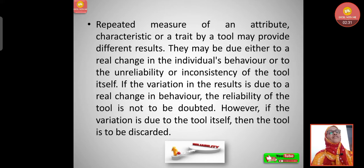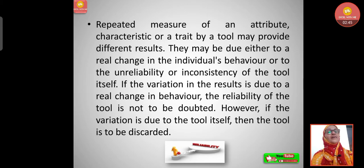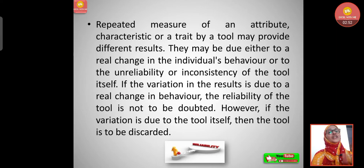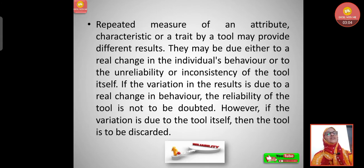Repeated measurement of an attribute or trait by a tool may provide different results. These variations may be due either to a real change in the individual's behavior, or to the unreliability or inconsistency of the tool itself. If the variation is due to a real change in behavior, the reliability of the tool is not to be doubted. However, if the variation is due to the tool itself, then the tool is to be discarded.